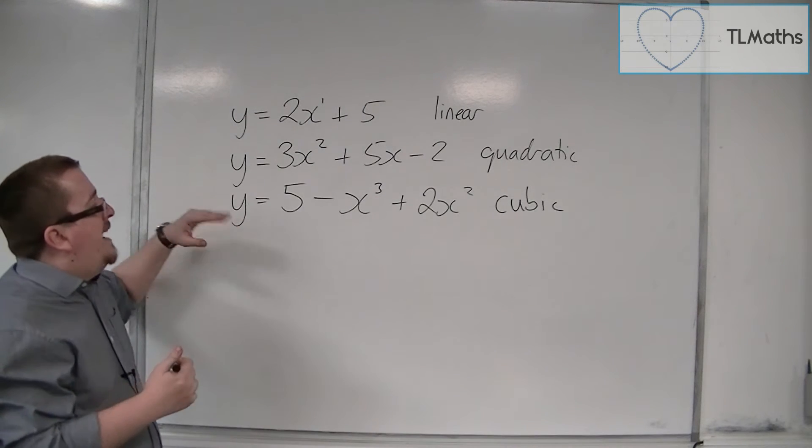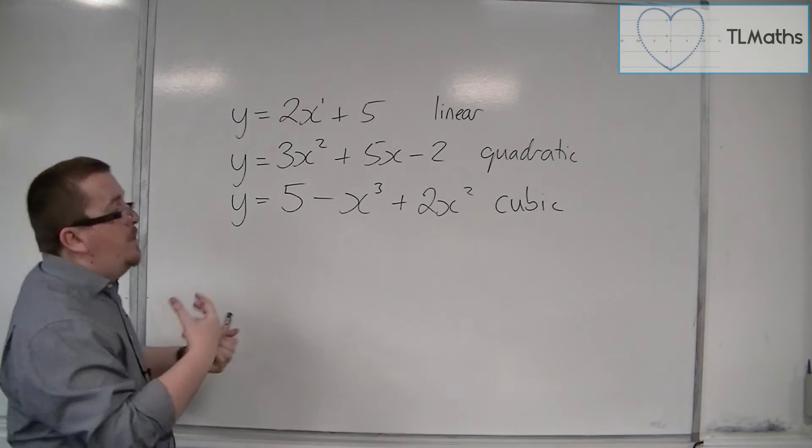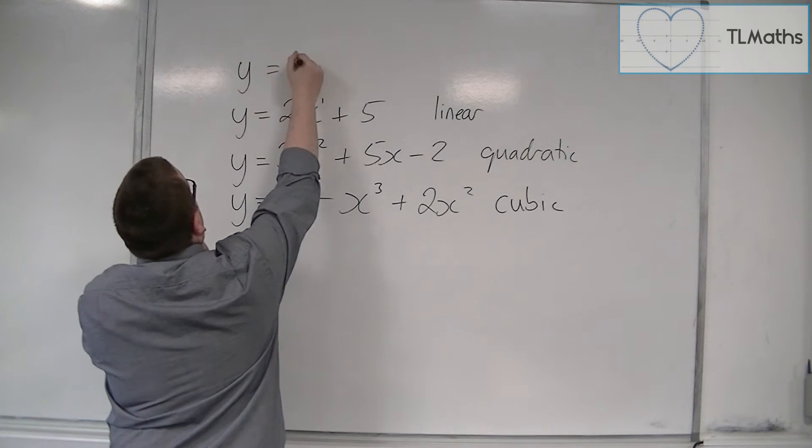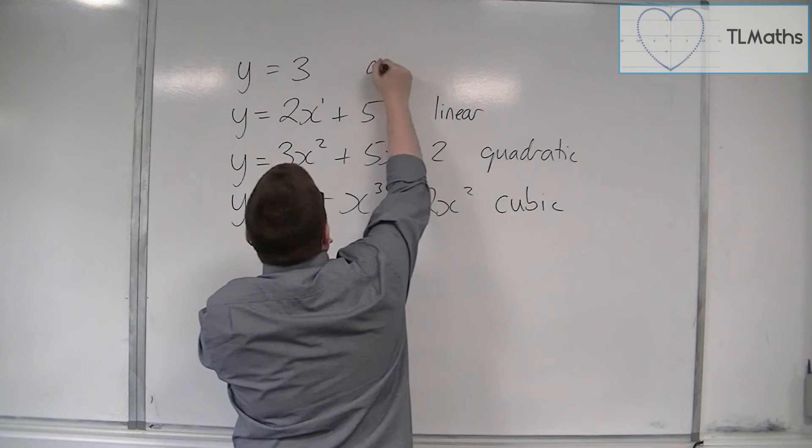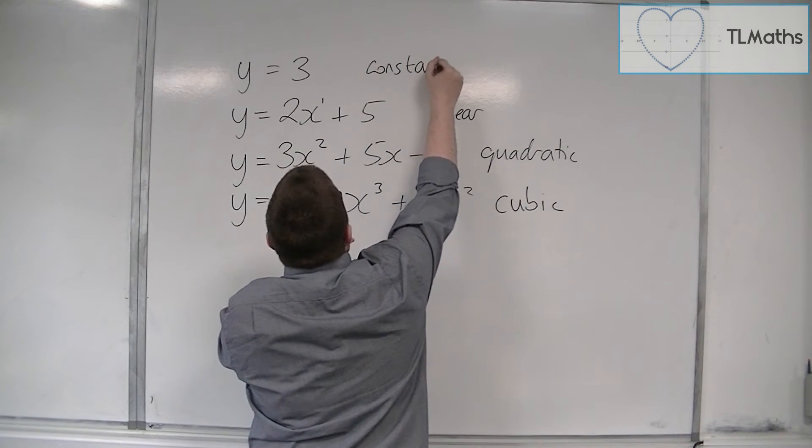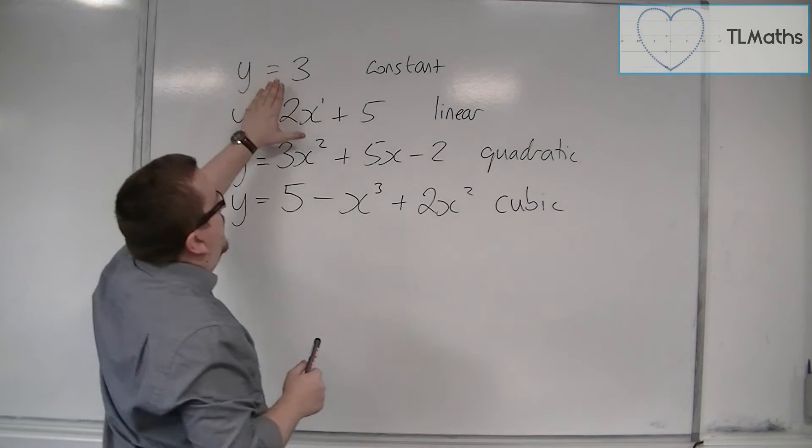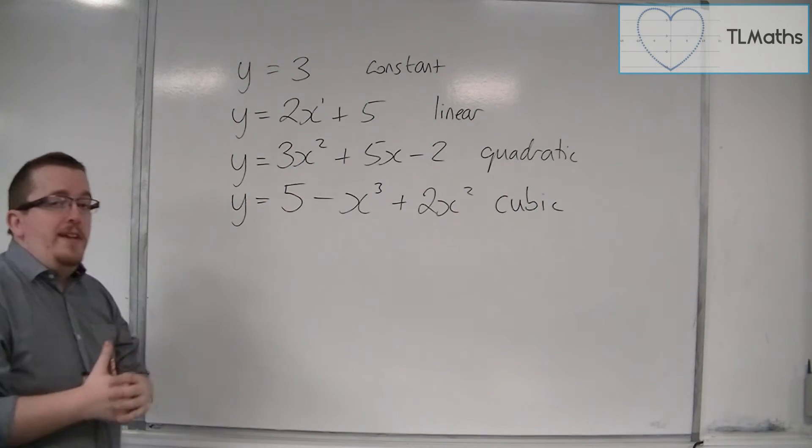So we could actually go backwards. We might have something that has no x's in it at all. So we could have y is equal to 3, and we would refer to that as constant.